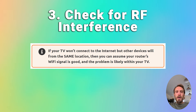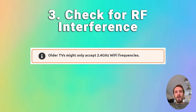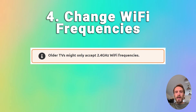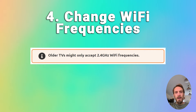A pretty common issue, particularly with older TVs, is that they cannot connect to the 5GHz Wi-Fi channel that modern routers use, and can only connect on 2.4GHz instead. Check the user manual for your specific TV to see which bandwidths it supports — even some TVs from as late as 2018 only support 2.4GHz.